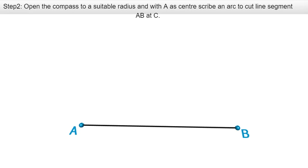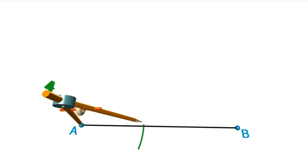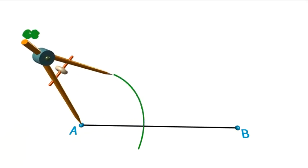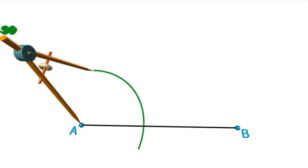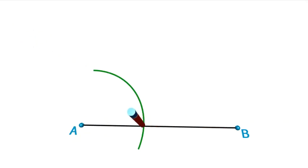Again, suitable implies that you have to make a judgment, not too wide and not too narrow. So with A as center and my compass open to a suitable radius, I scribe an arc and ensure that arc cuts the line AB. And the point where it cuts the line AB, I call that point C.